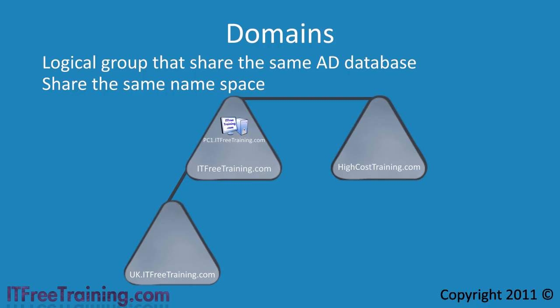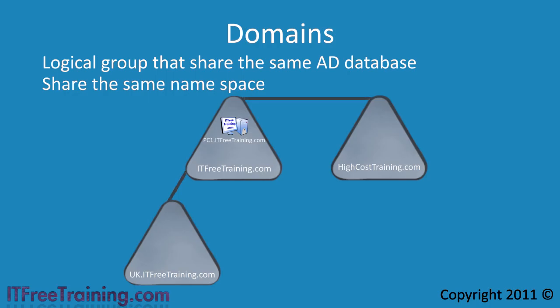Notice that when talking about Active Directory and domains, they are represented in a special way. Triangles represent a domain. Between domains there can be a trust relationship, shown by the lines between the triangles. Inside these triangles or domains, you can put users, computers, and other Active Directory objects. Different literature may represent Active Directory objects in different ways, but if you think of the triangles as domains and anything inside the triangles as part of that domain, you can't go wrong.